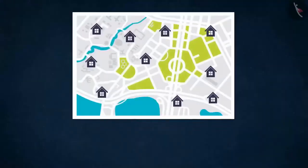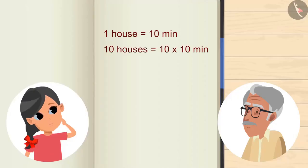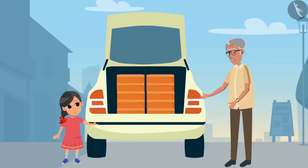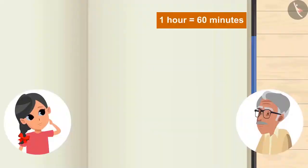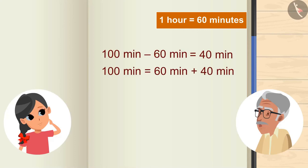Grandpa, how much time will each house take? Nearly 10 minutes. And we have to go to 10 houses. So, 10 houses will take 10 minutes each — 10 multiplied by 10 — it will take 100 minutes. And do you know how many hours are in 100 minutes? Well, let me tell you. 1 hour has 60 minutes. If we subtract 60 from 100 minutes, we will be left with 40 minutes. We can also say: 60 plus 40 minutes together gives 100 minutes. So, 100 minutes means 1 hour and 40 minutes.